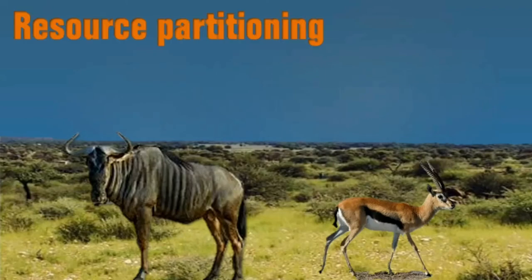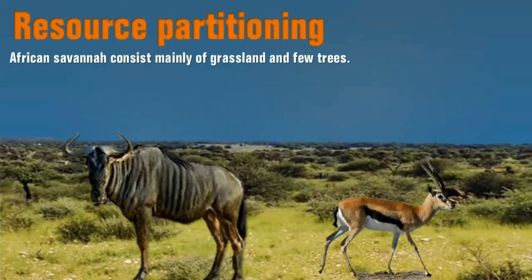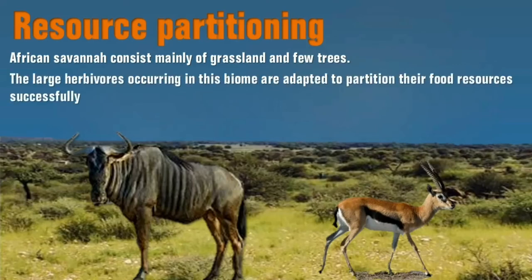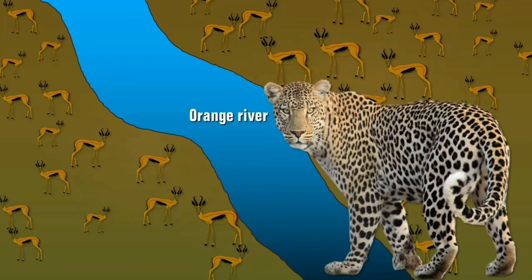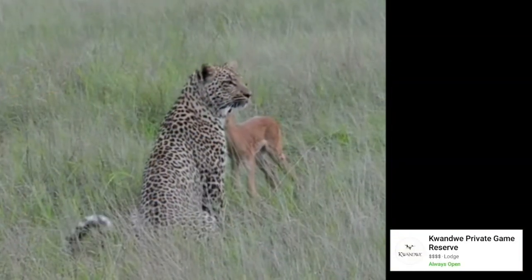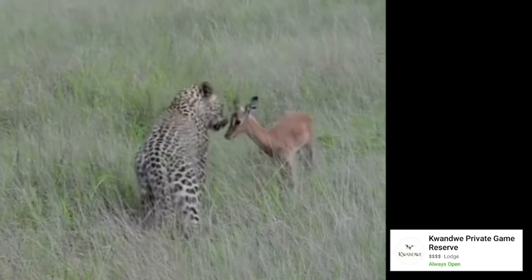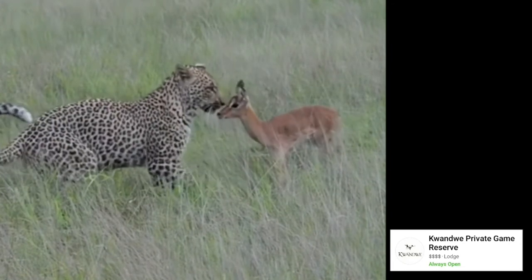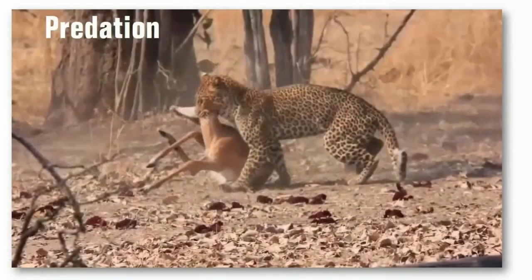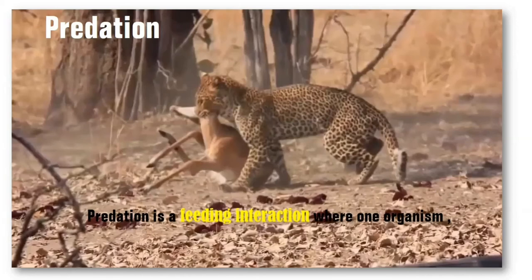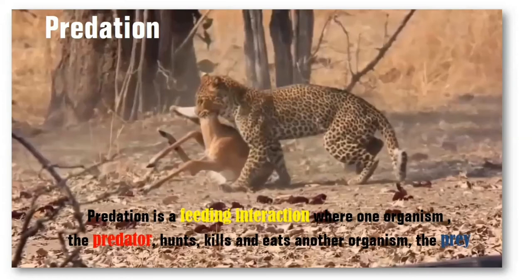The coexistence of species is a fundamental concept studied in ecology. Inherent in it are the concepts of niche and resource partitioning. The large herbivores occurring in the biome are adapted and partition their food resources successfully. For example, wildebeest are grazers while Springbok are mostly browsers. The leopard is an ambush predator found north of the Orange River. It relies primarily on surprise to overcome its prey, and its size and solitary hunting strategy limits the prey it can capture. Leopards prefer to kill prey of between 10 and 40 kilograms found in small herds or in dense habitats, because it minimizes the risk of injury during a hunt.